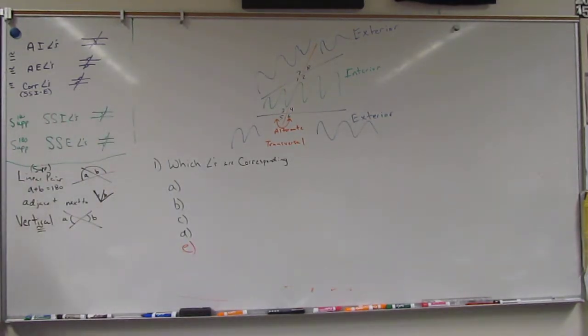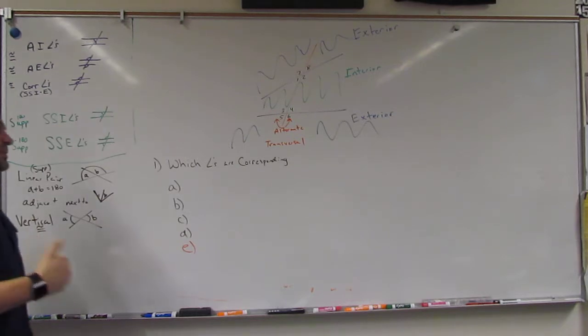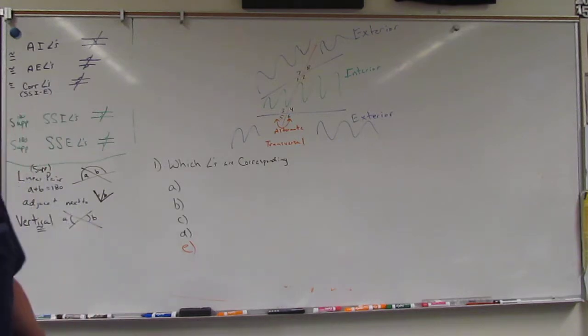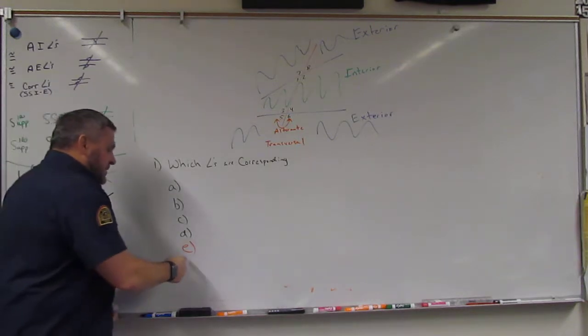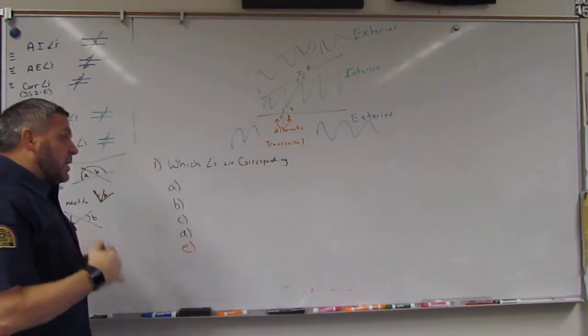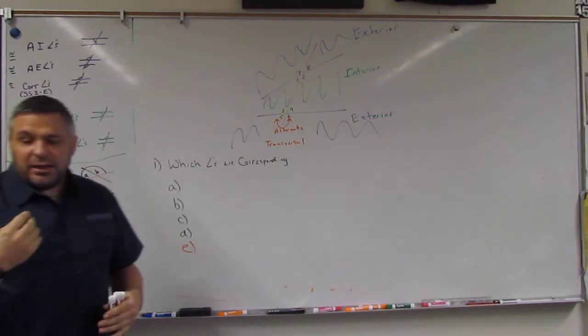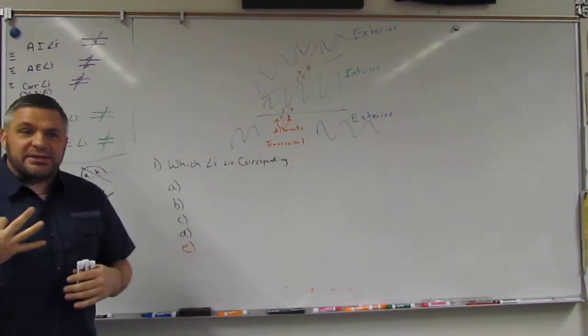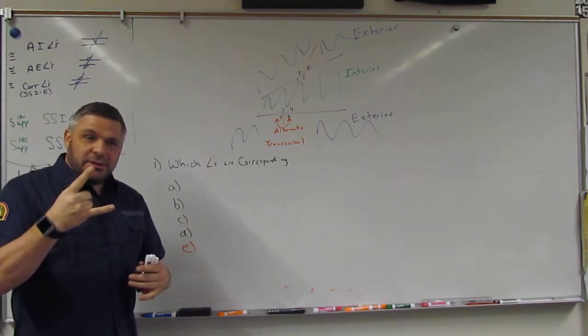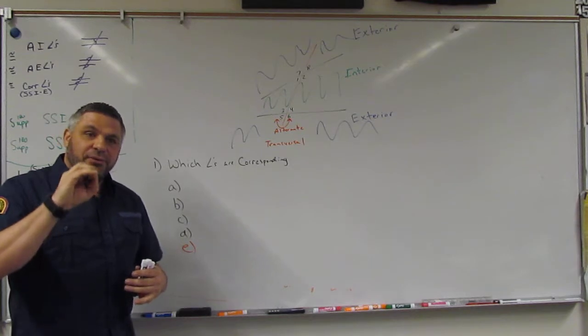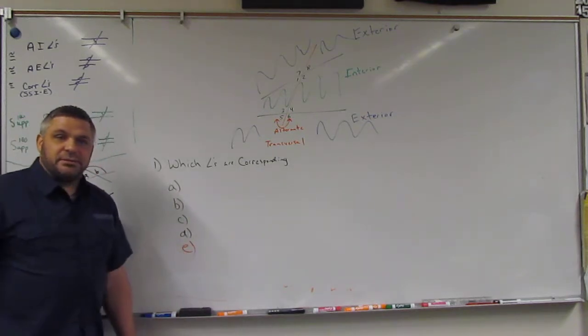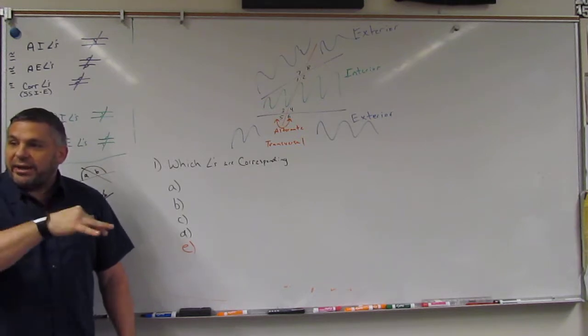Alright, so which angles are corresponding? That's what they're asking us. So they give us A, B, C, and D. And I want to tell you, there's always an E so that the people watching the film know that on my test, there are three possibilities: one answer, two answers, and no answer. If there's no answer, then you have to create your own answer. So it's like a write-in.